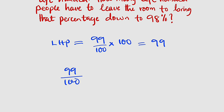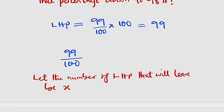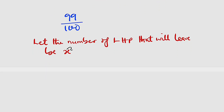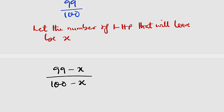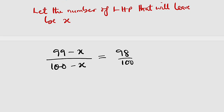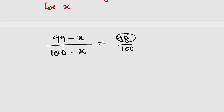We would like to determine the number of left-handed people that will have to leave. Let the number of left-handed people that will leave be x. Since x people are leaving, we subtract x from the total: (100 - x) total people remain, and (99 - x) left-handed people remain. The new percentage should equal 98 percent, giving us the equation: (99 - x) / (100 - x) = 98 / 100.